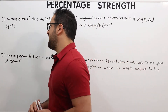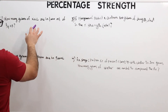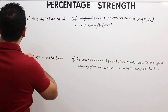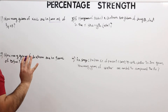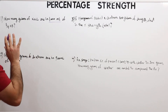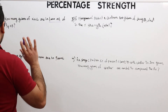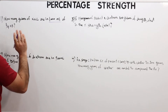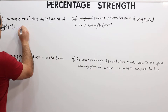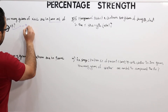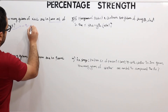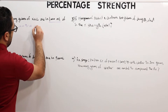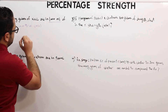Question number one asks how many grams of NaCl (sodium chloride) are in 1000ml of quarter normal saline. First, from the previous video, we know that normal saline (NS) is 0.9% — and NS is weight in volume, meaning grams per milliliter.